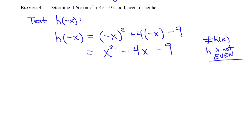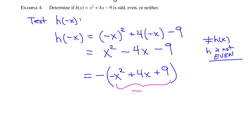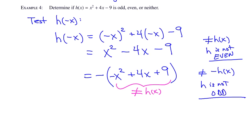Next, determine if h is odd by factoring out a negative to see what remains. That gives negative times the quantity x squared minus 4x minus 9... wait, factoring gives negative x squared plus 4x plus 9 inside. Check: the inside is not h of x, so it's not equal to negative h of x, and h is not odd. Since it's neither even nor odd, h is neither.